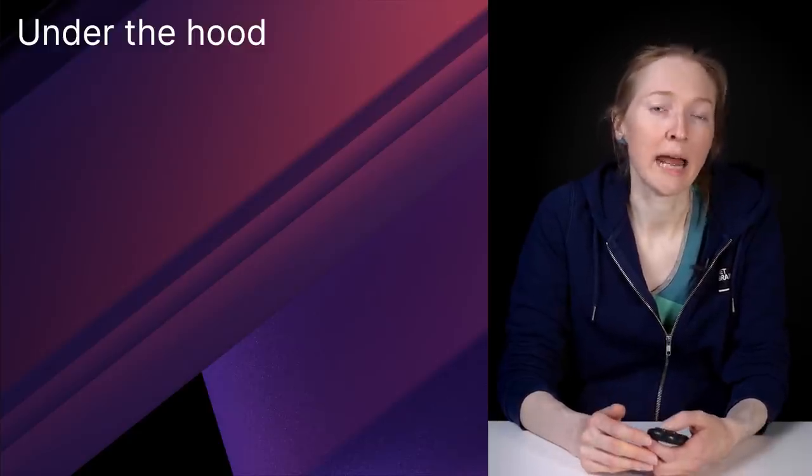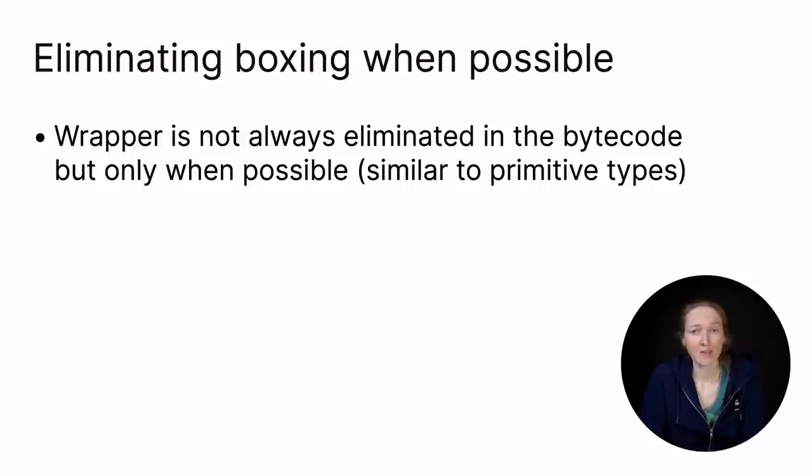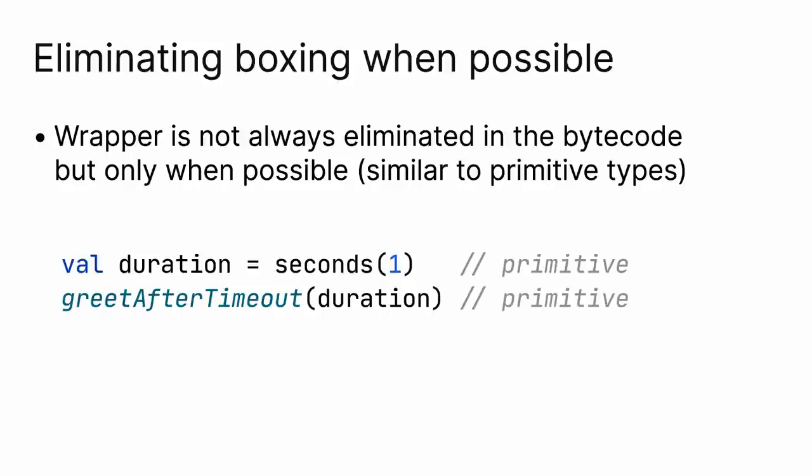Let's now glance at what happens under the hood. If you expect that an inline value class is always replaced with underlying value, that's not correct. The wrapper is not always eliminated in the bytecode, it happens only when possible. It works very similarly to built-in primitive types. When you define a variable or pass it directly to a function, its type gets replaced with an underlying value.